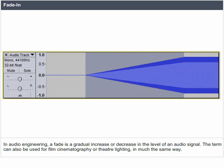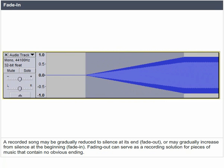In audio engineering, a fade is a gradual increase or decrease in the level of an audio signal. The term can also be used for film cinematography or theatre lighting in much the same way. A recorded song may be gradually reduced to silence at its end (fade-out), or may gradually increase from silence at the beginning (fade-in). Fading out can serve as a recording solution for pieces of music that contain no obvious ending.